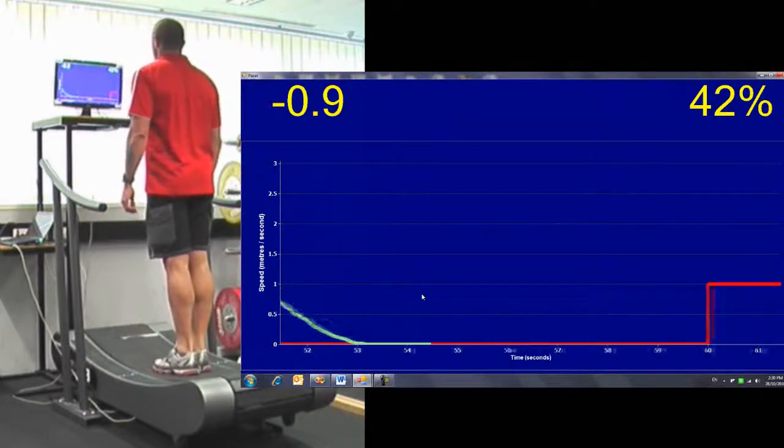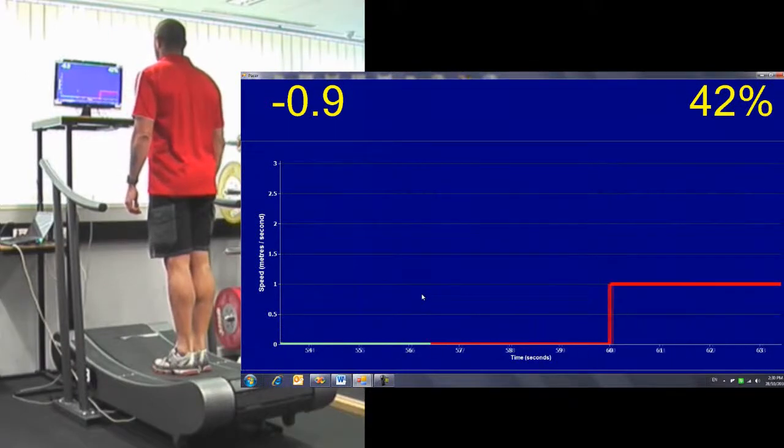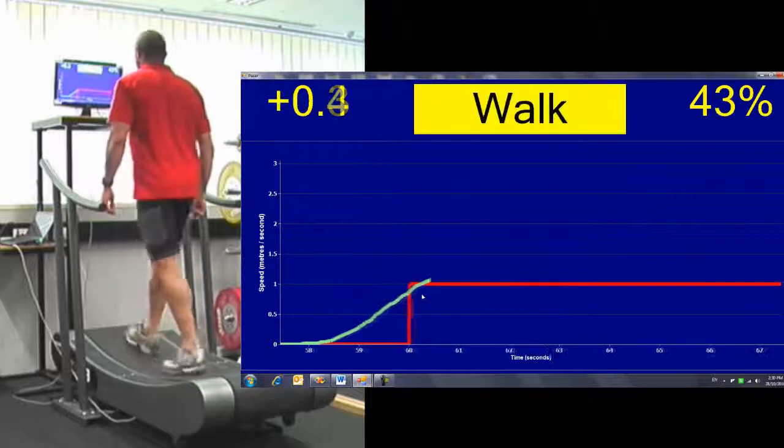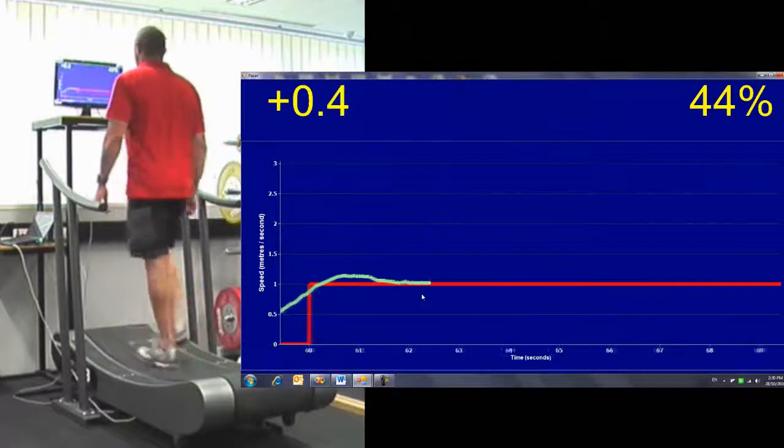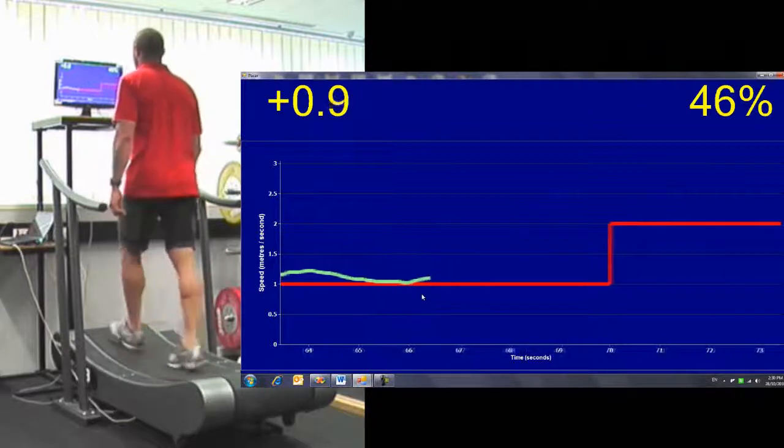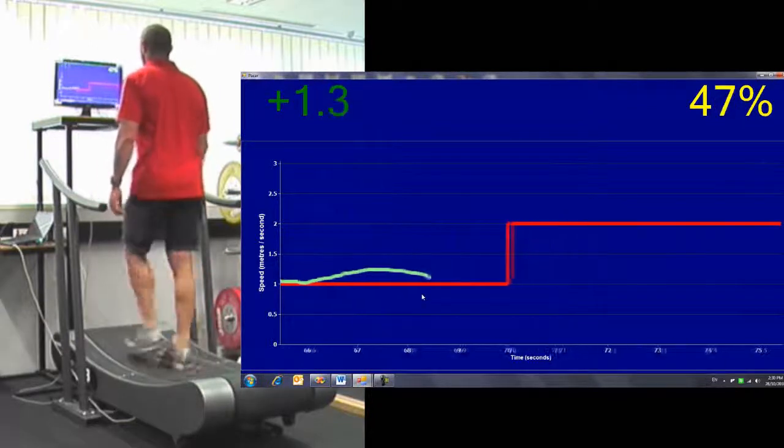As you are behind the target, the numbers on the upper left are red. As you get within a meter of the target they go to yellow. When you are over a meter ahead of the target.